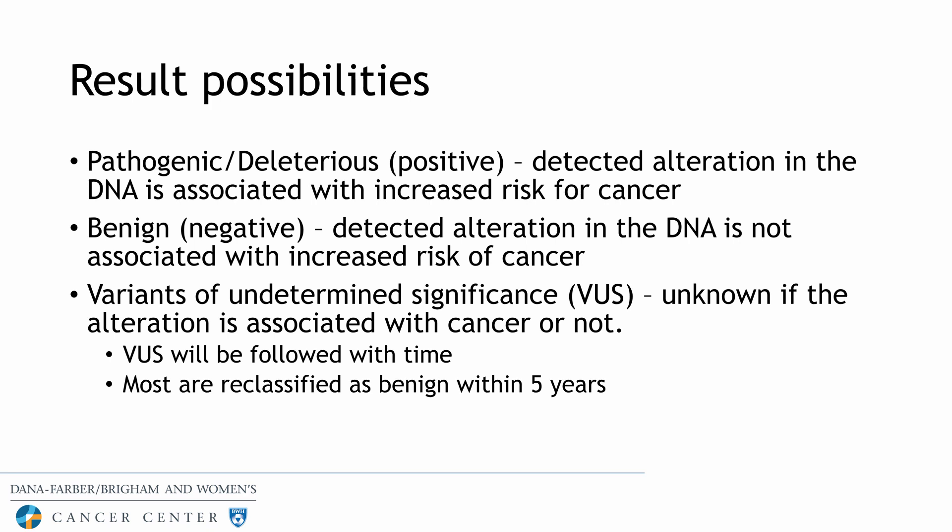If you have a consultation and germline genetic testing, there are a few possible result types. A positive result means there's a pathogenic or deleterious mutation in a cancer gene associated with an increased cancer risk. A negative result means any detected alteration is benign. There may also be a variant of undetermined significance, or VUS — an alteration in the DNA where we don't yet know if it's associated with cancer. VUSs are followed over time, and most are reclassified as benign within five years.